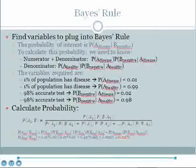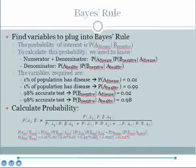Let's plug these values into our equation. For the numerator, the probability of having the disease is 0.01. We multiply this by the probability of testing negative given having the disease, or a false negative, which is 0.02. We then divide this by the same product plus the product of the probability of being healthy times the probability of testing negative if one is healthy, or 0.99 times 0.98. We then divide the numerator by the denominator and obtain the value 0.0002.